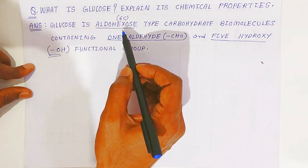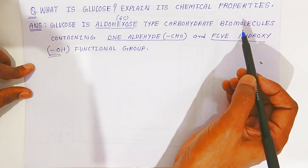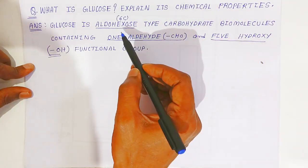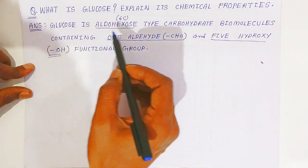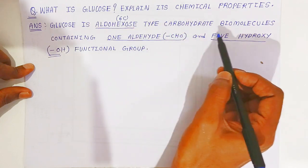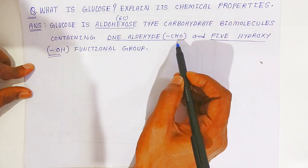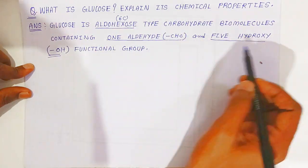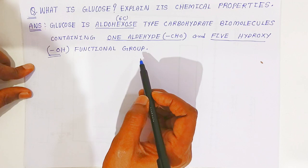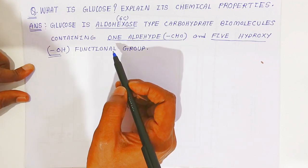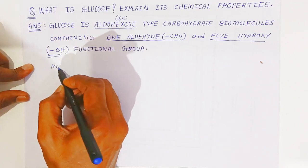So glucose is an aldohexose type carbohydrate biomolecule containing one aldehyde and five hydroxyl functional groups. Now, what is the molecular formula of glucose?